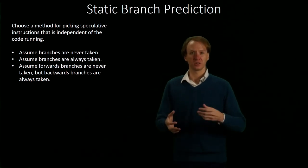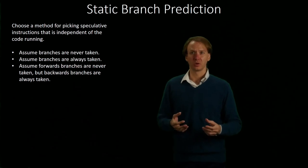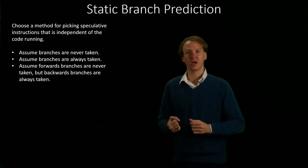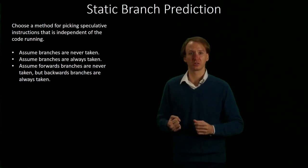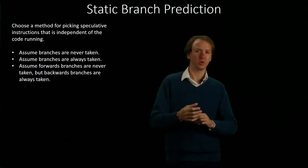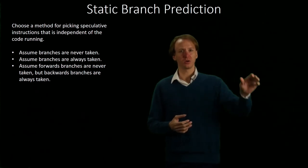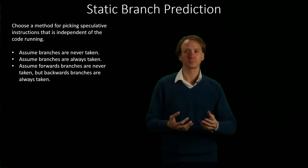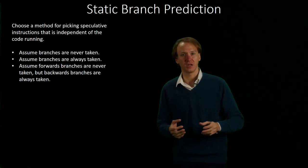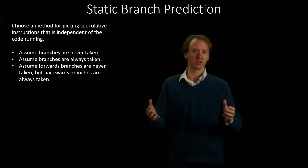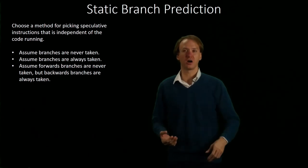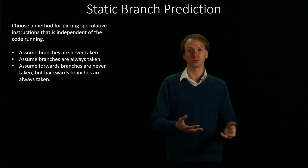For something slightly more complicated, we might assume that we never take forwards branches, but we'll always take backwards branches. Forwards branches are associated with ifs, and we usually want to go into our if block, so we don't want to jump over that block. Backwards branches are associated with loops, and we often want to run our loops multiple times, so we assume those are taken.